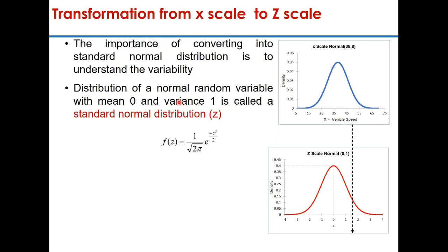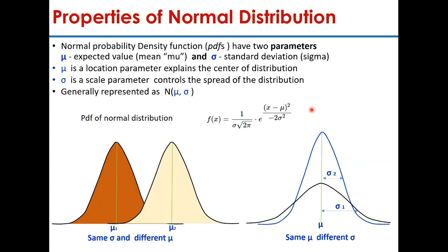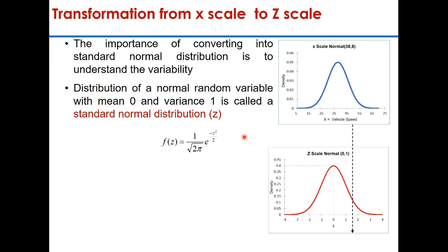In this equation, if mu becomes 0 and sigma becomes 1, then this distribution is called the standard normal distribution. This is the equation for the standard normal distribution, where z = (x − μ) / σ. Here, x is the value, mu is the mean, and sigma is the standard deviation.